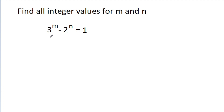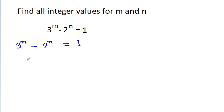In this video, we have given that 3^m - 2^n is equal to 1, and we have to find all integer values for m and n. So we have 3^m - 2^n = 1, which gives us 3^m = 2^n + 1.